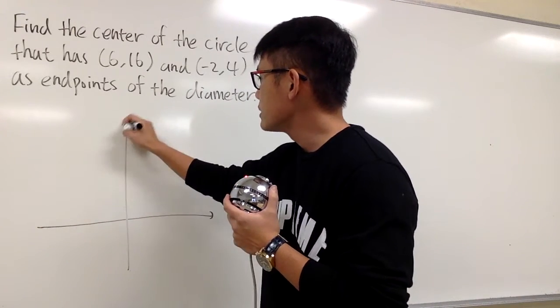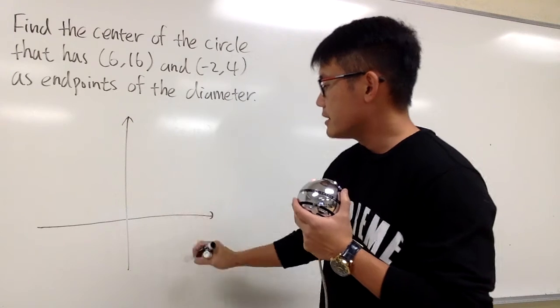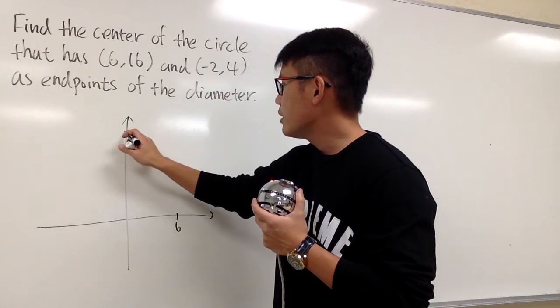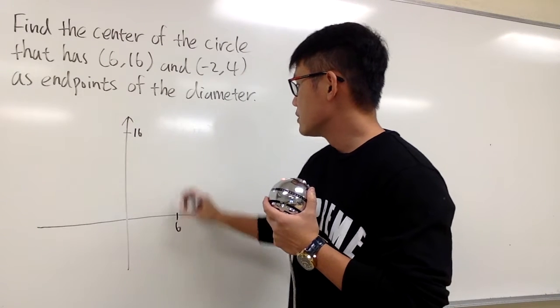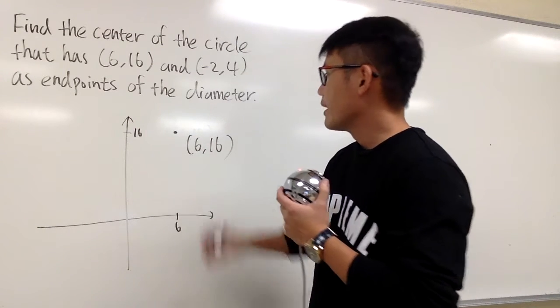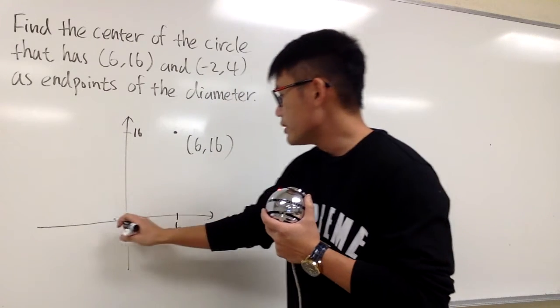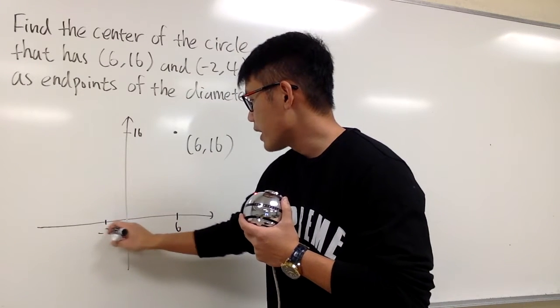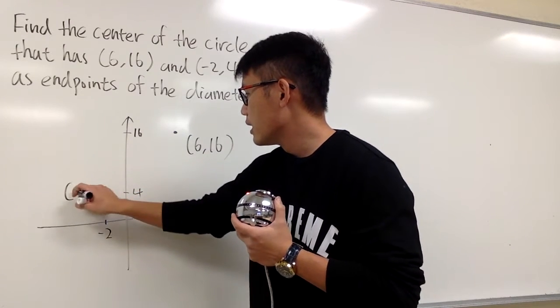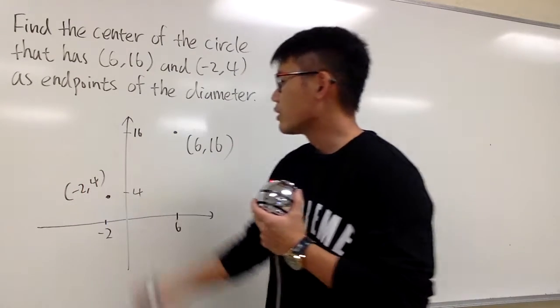So, let me put down these two points. The first one is 6,16. And let me just mark it here to say 6, and let me mark it here to say this is 16. So, this is 6,16. And we have another point, which is negative 2. Let me just put it down right here. And let's say 4 is right here. So, this is the point negative 2,4.